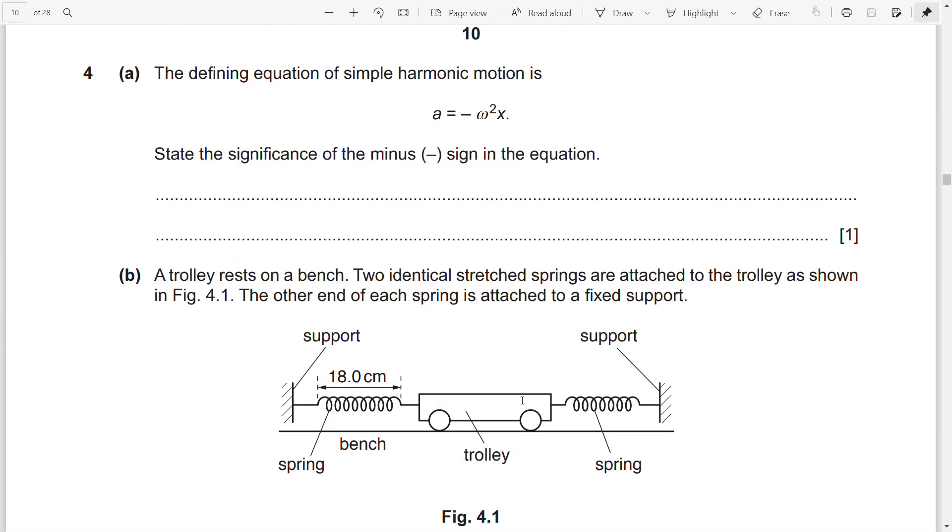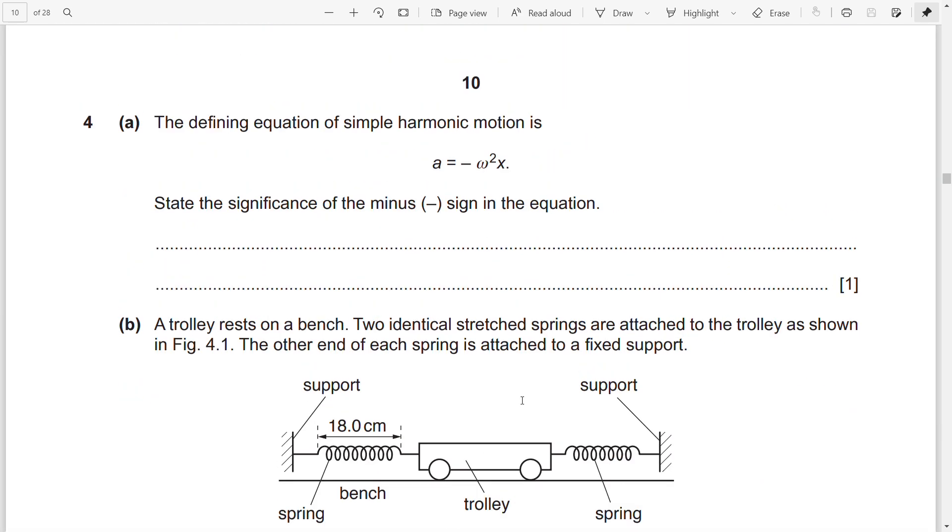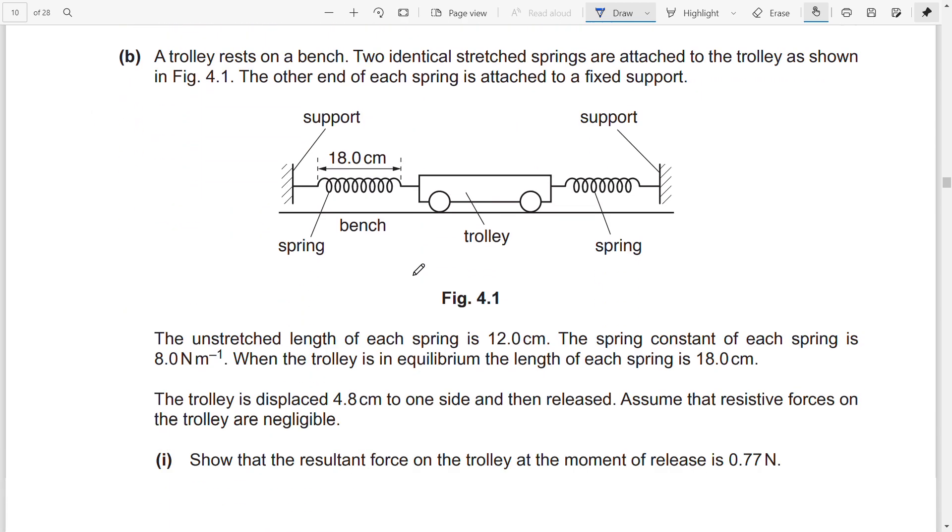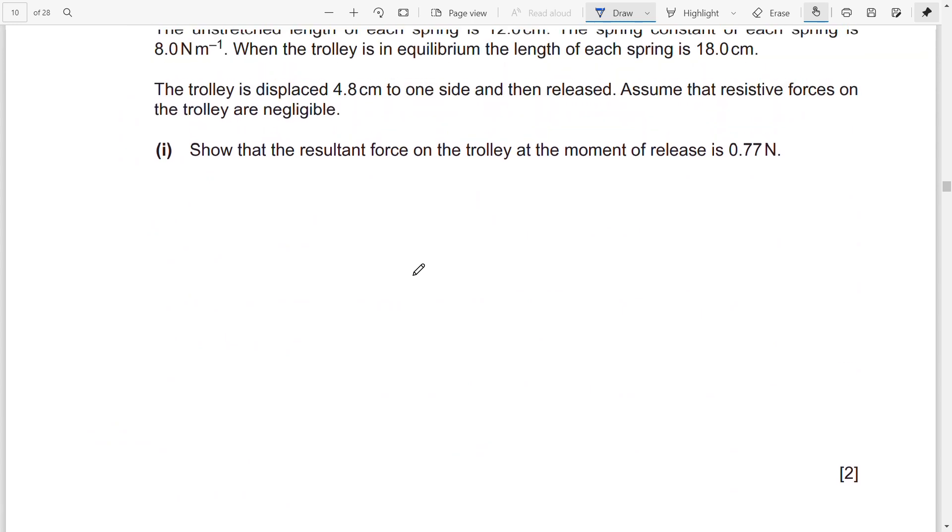Question four. Here the defining equation of simple harmonic motion is a = -ω²x. So what is the significance of the minus sign? You can write that acceleration is proportional to displacement but in the opposite direction. These are the answers. This is a simple one, maximum marks you'll get.